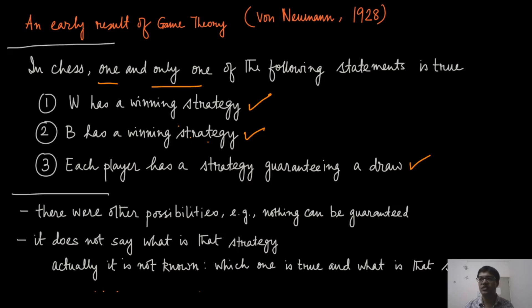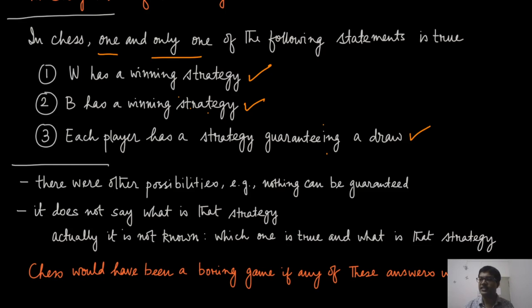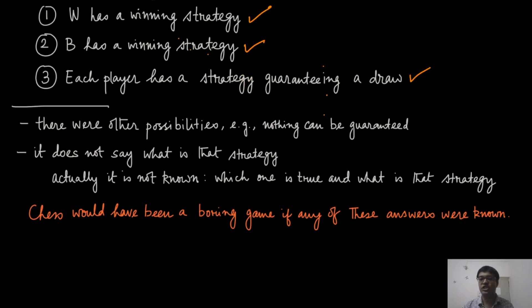What it is not saying is which of this is true. So, we do not know which of this is true. And even if we know that, what is that strategy? It is also not saying that. So, if we had answers to these two things, then possibly chess would have been a much easier game than it looks like, actually chess would have been a very boring game. So, if you want to contrast this with a simpler game like tic-tac-toe, where you actually know that both these players have a strategy of guaranteeing at least a draw and you know how to play that strategy, tic-tac-toe is no longer an interesting game. While chess is because even though we know this result, we do not know which one of this is true, we also do not know what that strategy is.